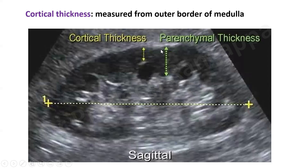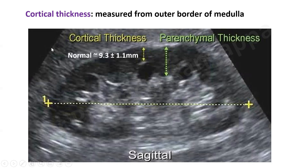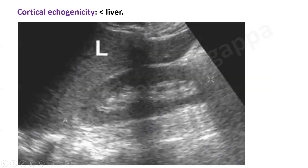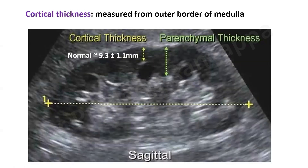Then we look at the cortical thickness. If you recall the cross-sectional image of the kidney, the cortical thickness is measured from the outer border of the medulla. If you look at the white aspect of the kidney — which ends at the medulla — you take from there to the periphery, and that gives the cortical thickness. One has to be careful when measuring cortical thickness: it has to be taken from the edges of the papilla to the circumference. The normal cortical thickness is 9.3 to 11 millimeters.